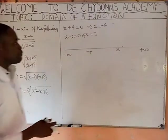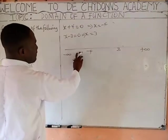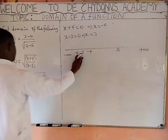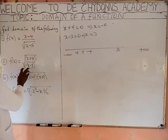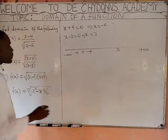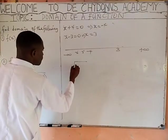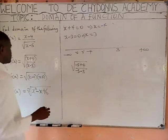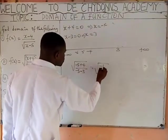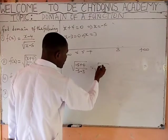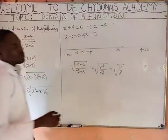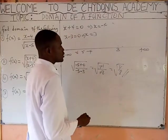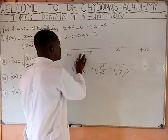We only got minus 4 and 3. Now pick any number to the left of minus 4 — say minus 5. Put it in the function: square root of (minus 5 plus 4) over (minus 5 minus 3) gives square root of (minus 1) over (minus 8). The two negatives cancel, giving square root of a positive number — which is defined. So everything in this region is defined.